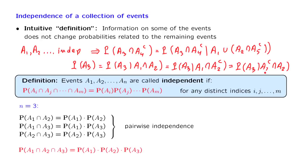So any kind of information that I might give you about events a1 and a2, which one of them occurred and which one didn't, is not going to affect my beliefs about event a3. The conditional probabilities are going to be the same as the unconditional probabilities.